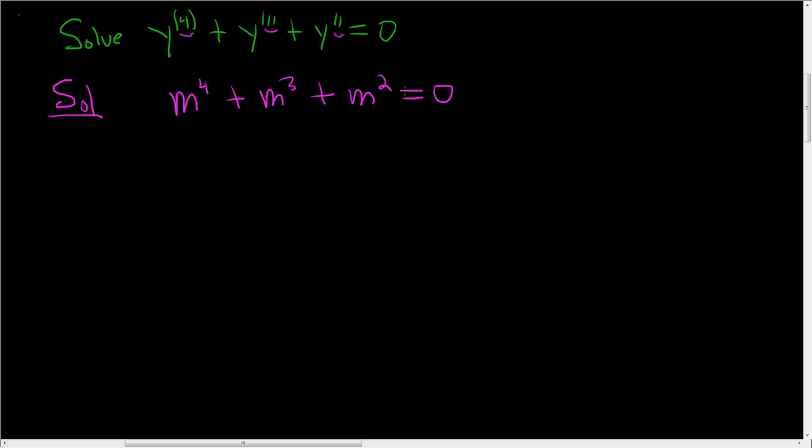So this is called the characteristic equation, and the first step is to find the roots of this equation. So to solve this, looks like we can factor out m squared. So we end up with m squared times m squared plus m plus 1 equals 0.